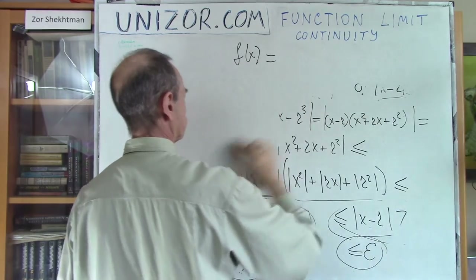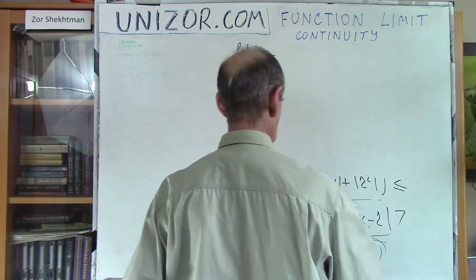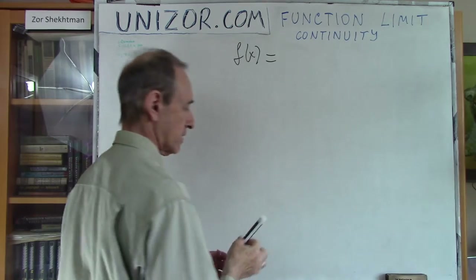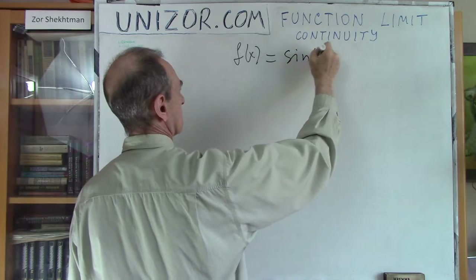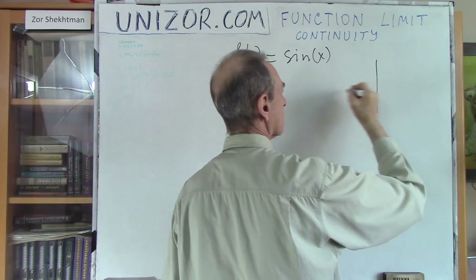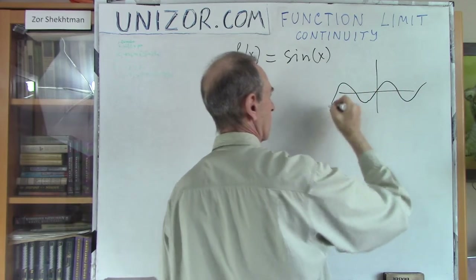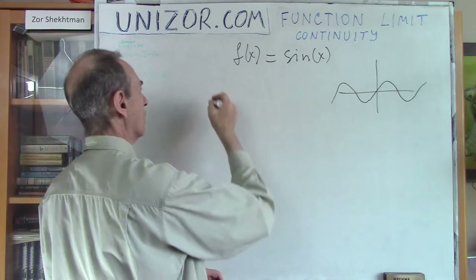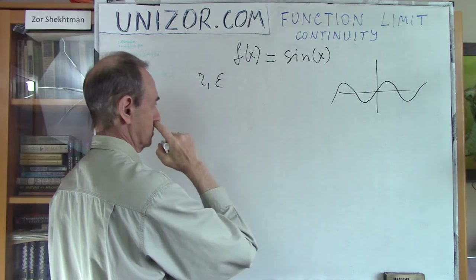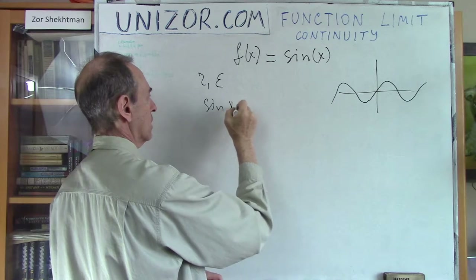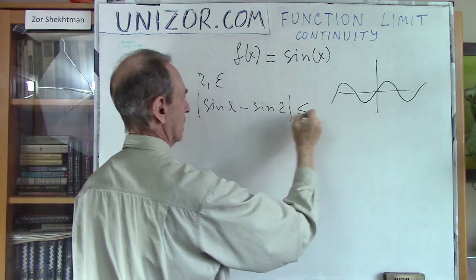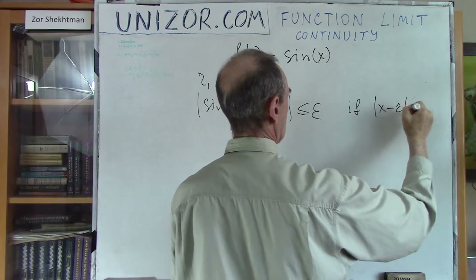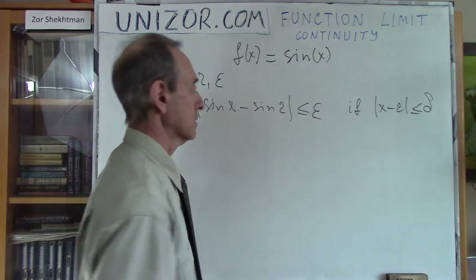Let's have another example: f(x) = sin(x). Again, we know the graph looks like a continuous wave. Now we would like to prove it. So let's analyze what we have to prove. Again, we choose r and choose epsilon. What we have to do is find such a delta that |sin(x) − sin(r)| ≤ ε if |x − r| < δ. So what is my delta? Let's think about it.